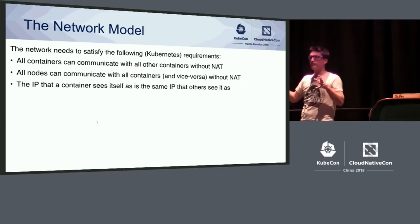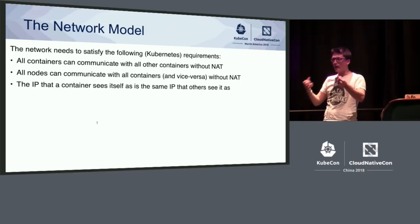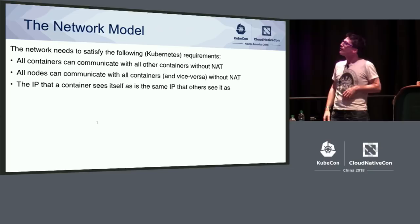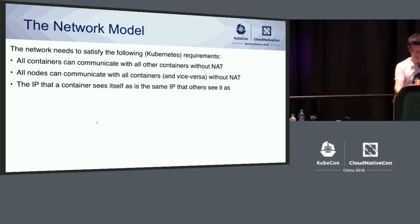For a network layer in Kubernetes to be compliant, it needs to follow these three rules. But what that really boils down to is every pod in the cluster has its own unique IP address. Each one of those needs to be able to talk to each other just using that IP address, and there's no address translation in between. Also, pods need to be able to talk to nodes, and nodes need to be able to talk to pods. That's it.